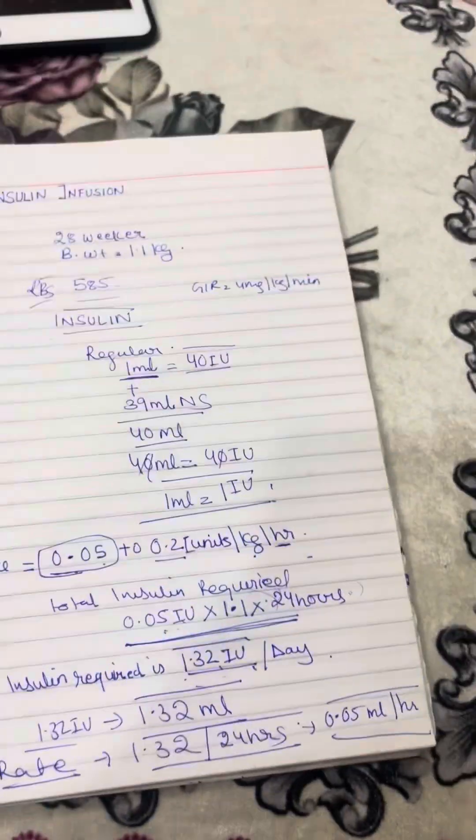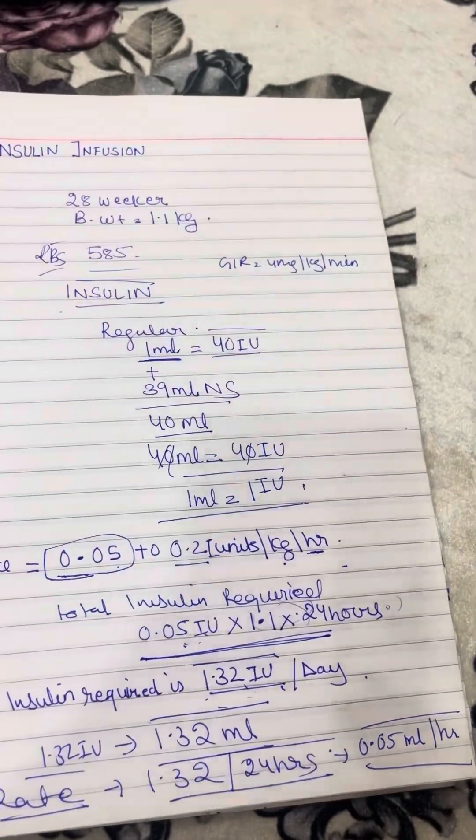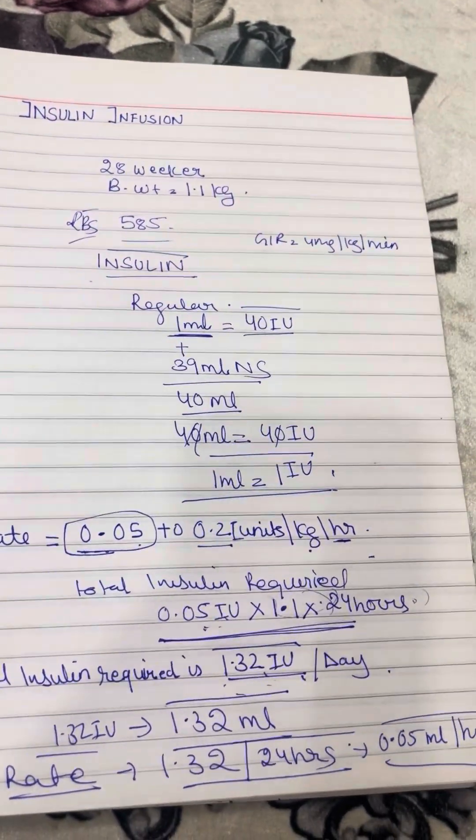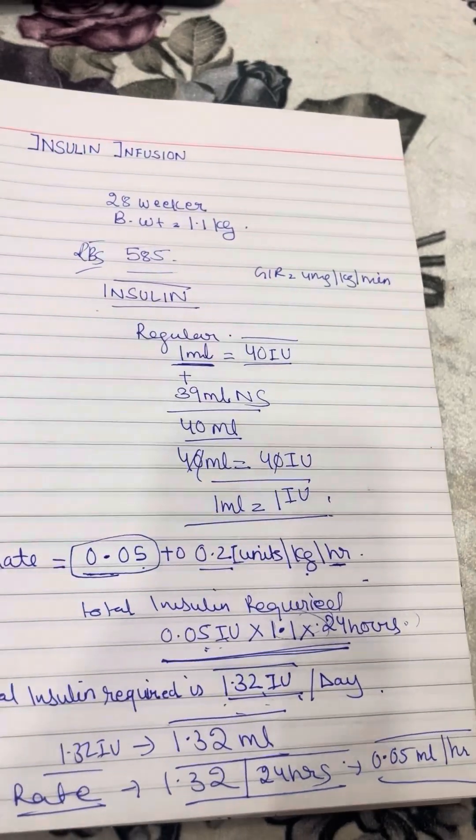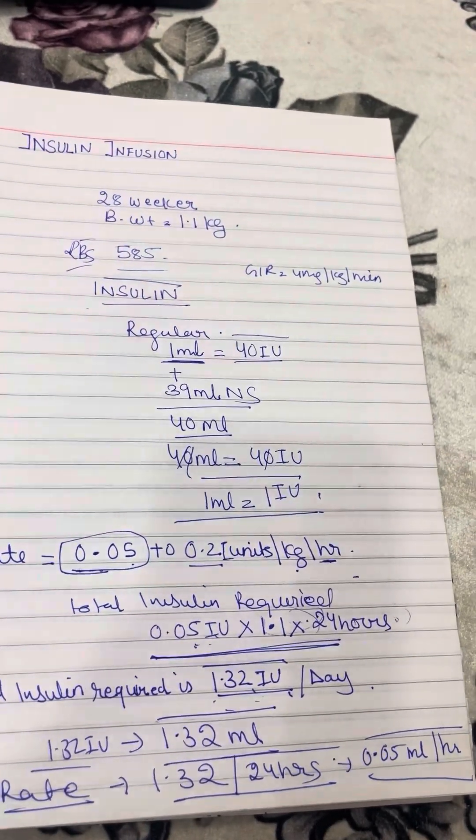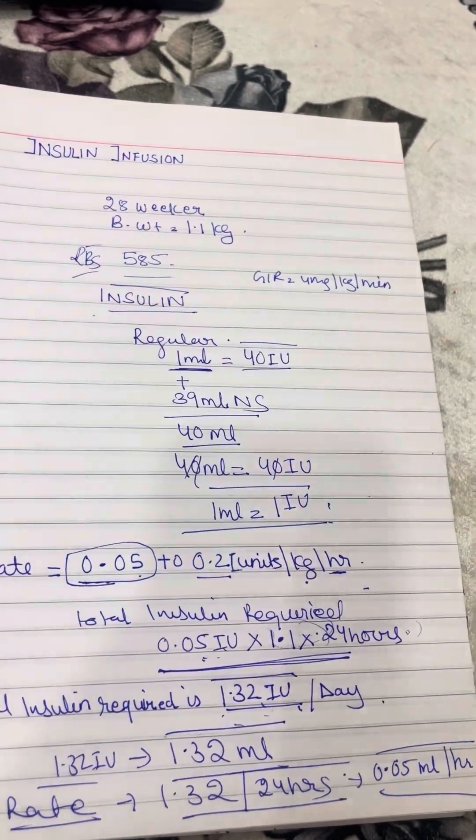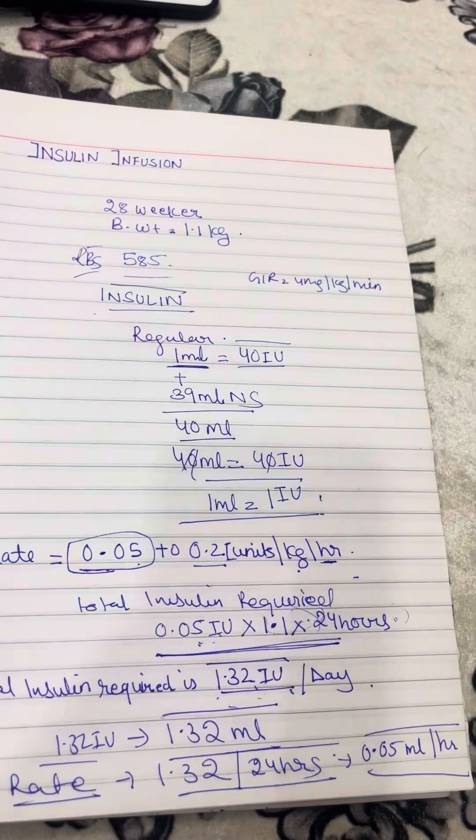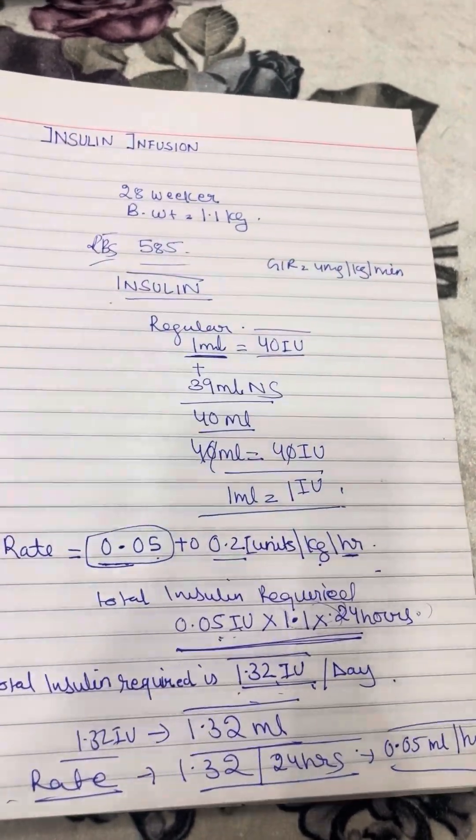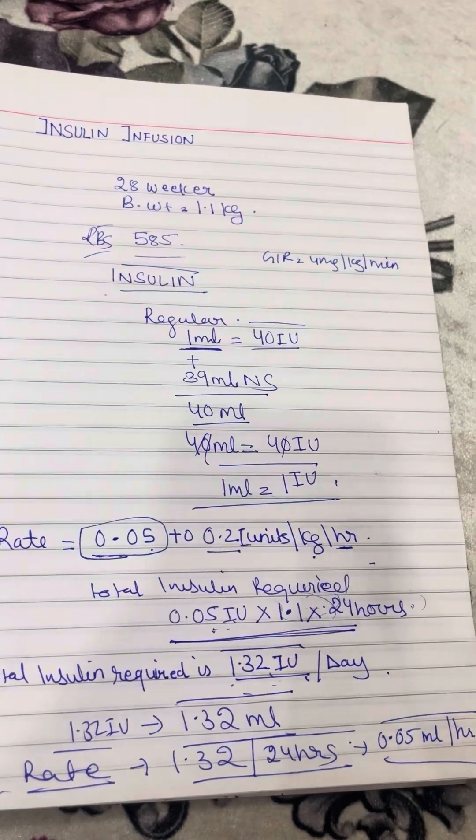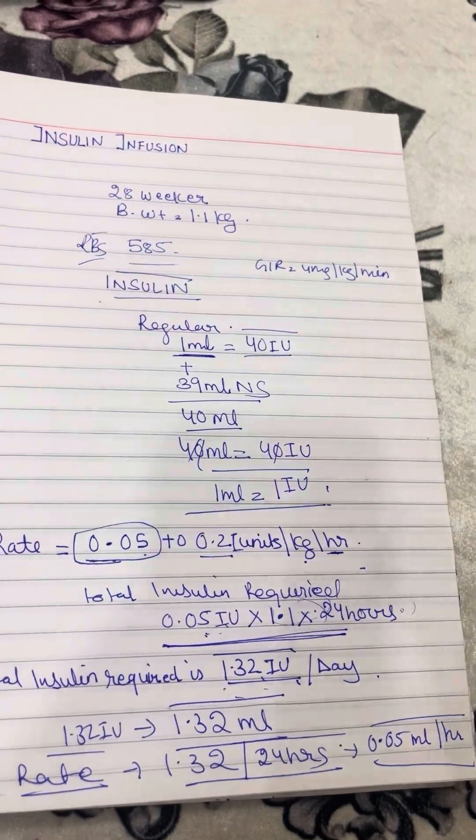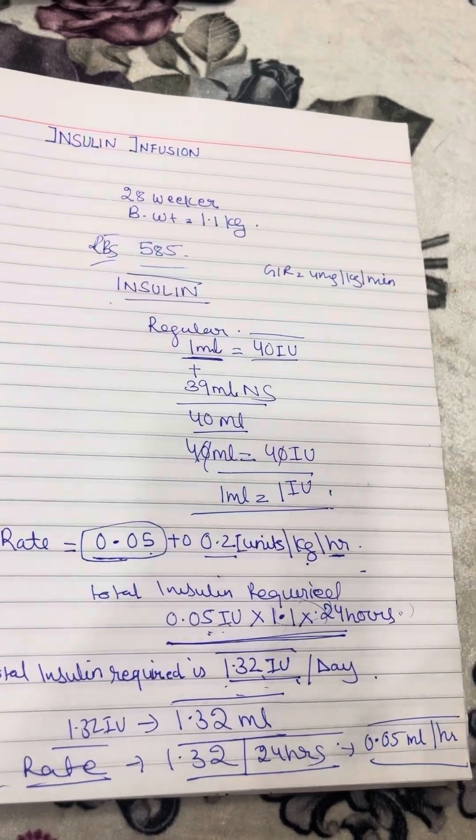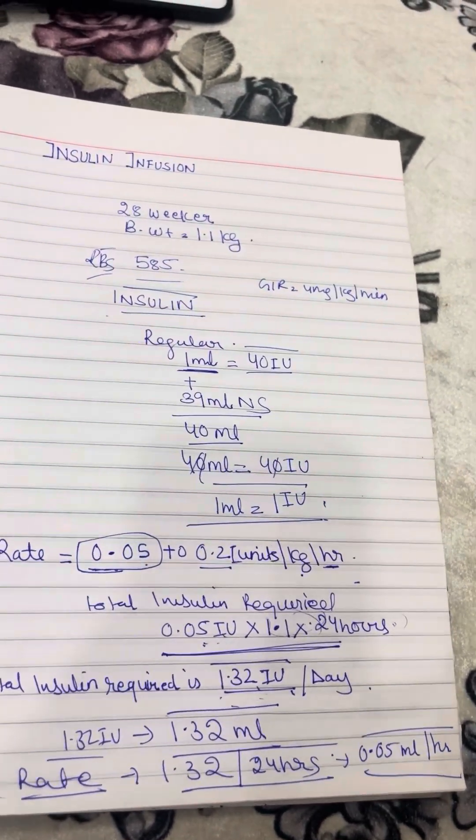So this is a very basic, very easy conceptual way of remembering insulin infusion. There are two other ways of doing it - how to make single-strength insulin and double-strength insulin. You don't have to memorize any formula. If you know the concept, you can come up with the exact rate that is needed.